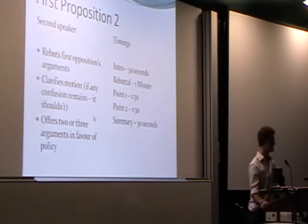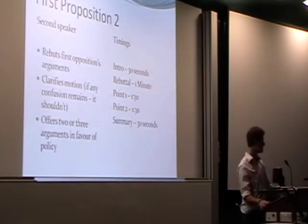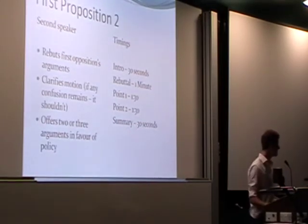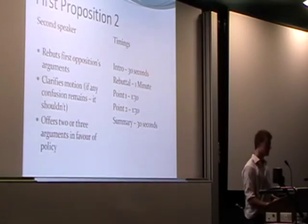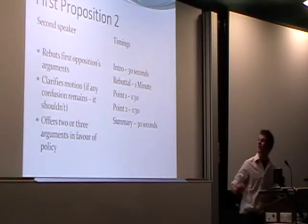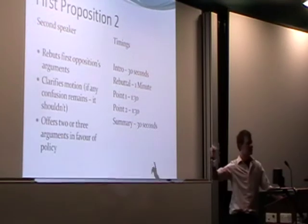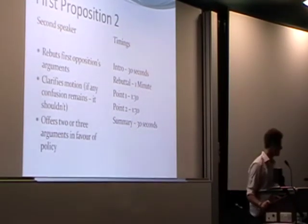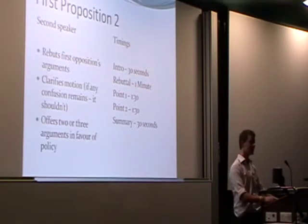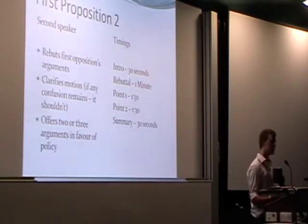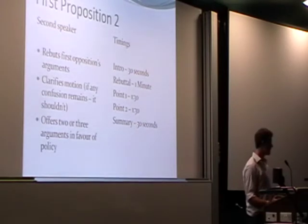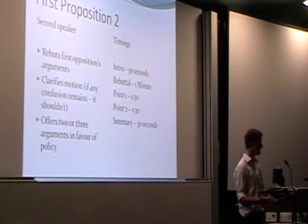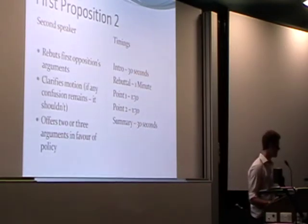The second proposition speaker, so the person on their team speaking after them, does much the same thing. They have to rebut the first opposition's arguments. So the first speaker has spoken, then the first opposition speaker has spoken, and then the second speaker of the first proposition speaks. The second speaker has to rebut any arguments which have come up against their side, but also has to offer two or three arguments in favour of the policy.